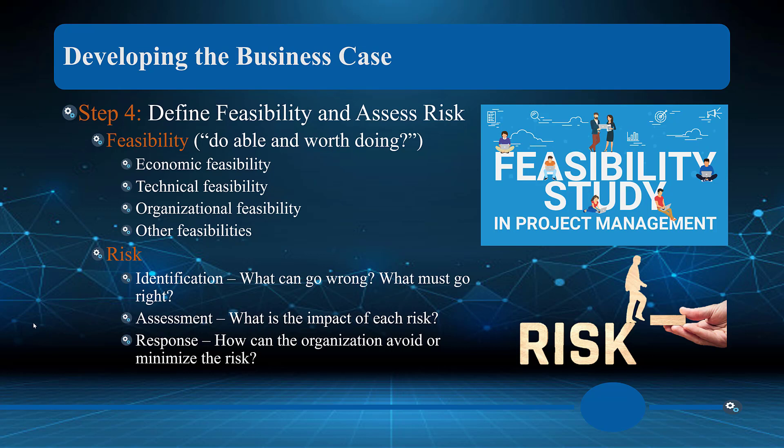We also need to look at risks: identifying what can go wrong and what must go right. Not just what can go wrong, but what must go right. For example, if we have a key expert in our organization, what must go right is that we retain that person to keep the project on track — because if we lose them, we may be looking at a six-month delay getting someone else in. Not to mention, if that person has been with the organization for a while, they have knowledge we may not be able to retain if they leave.